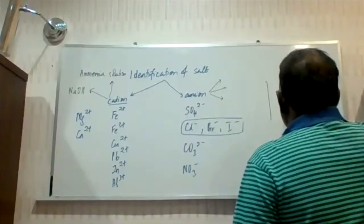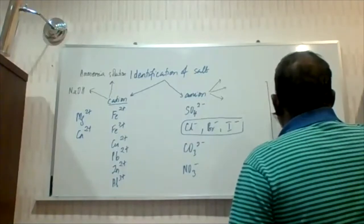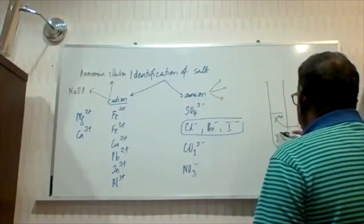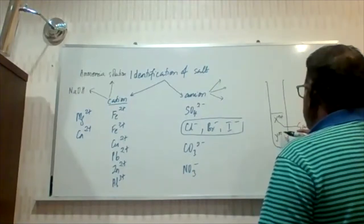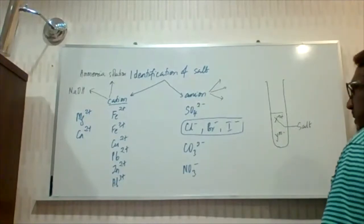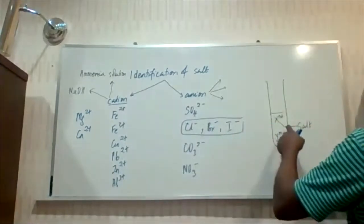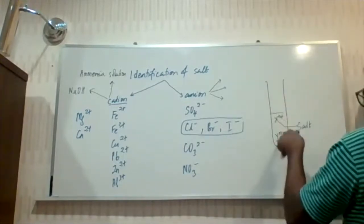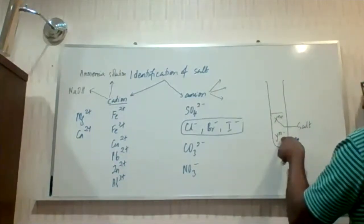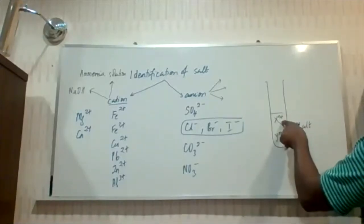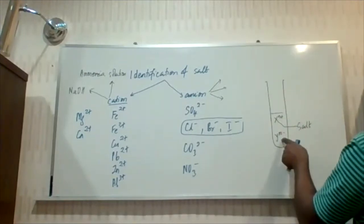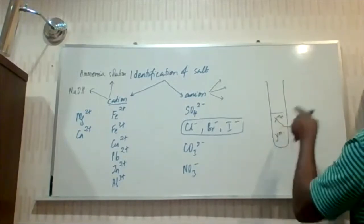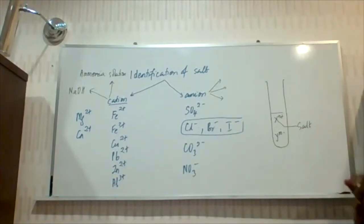When you're doing the test, another thing students sometimes confuse: in the test tube, you put in the salt, and both the cation and anion are present at the same time. When you are carrying out cation tests, you are not separating the cation from the anion — no. While you're doing the cation test, the anion is still present, but the anion will act as a spectator ion. Similarly, when you're doing tests on the anion, the cation is still present but will not respond and will act as a spectator ion.